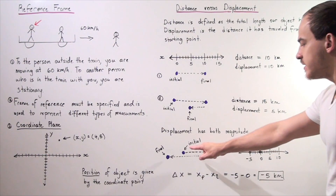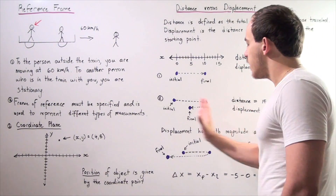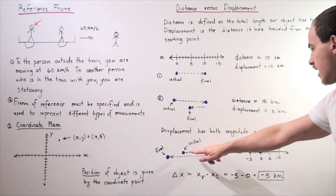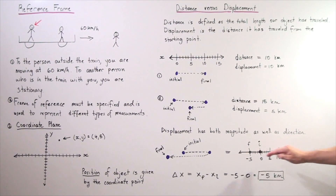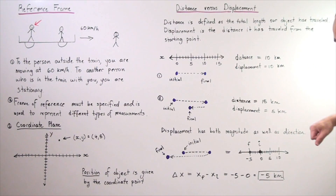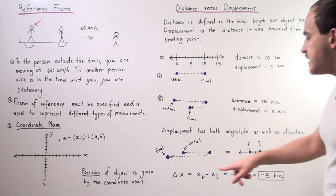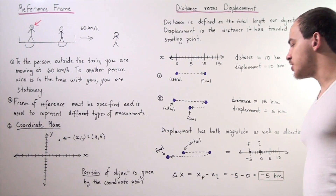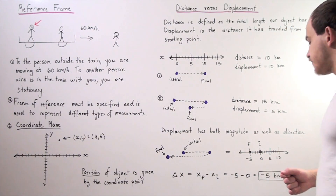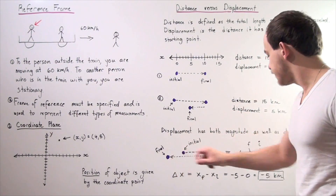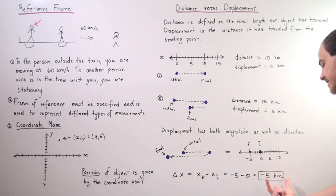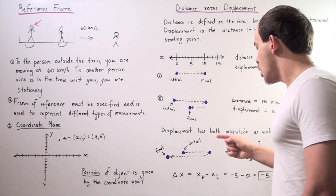Let's look at our final example. Our person starts at the initial point, goes forward, and goes back past the initial point. Let's say the initial point is at 0, they go all the way to 10, and then all the way back to negative 5 along our X axis. Total distance traveled is 10 going one way and 15 going back, so 25 kilometers. What about displacement? We find delta x — delta means change, and delta x is x final minus x initial. Our final point is negative 5 and our initial is 0, so negative 5 minus 0 is negative 5 kilometers. So displacement is 5 kilometers in the negative direction — that's what the negative represents.